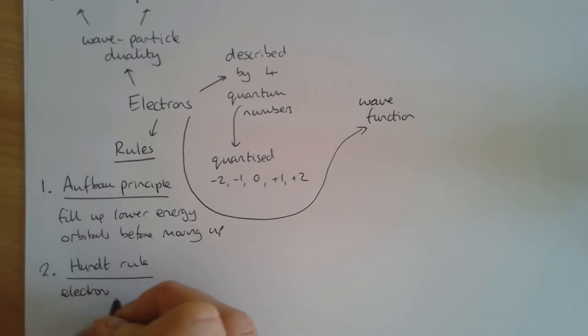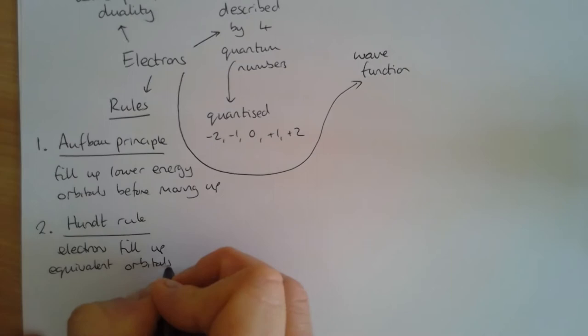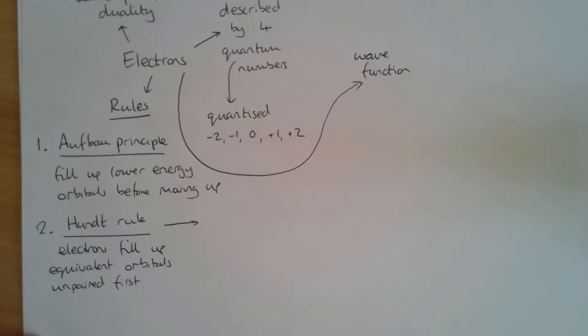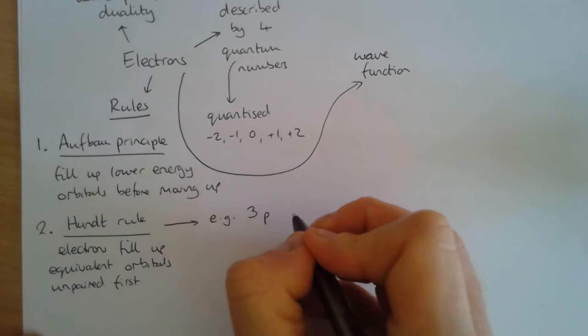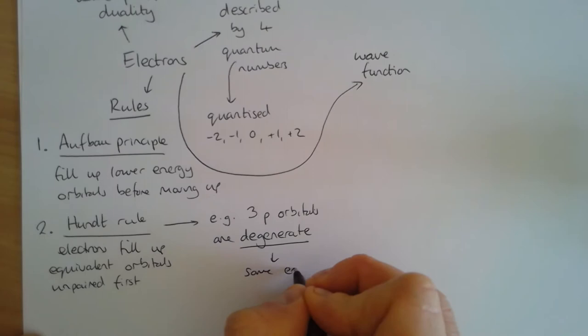Number two is Hund's rule. Hund's rule states that electrons fill up equivalent orbitals unpaired first. So if we're putting four electrons into a p subshell, the three p subshells are equivalent in energy — we put three of them in unpaired before we pair one up. This introduces the word 'degenerate': for example, the three p orbitals are degenerate, meaning they have the same energy.